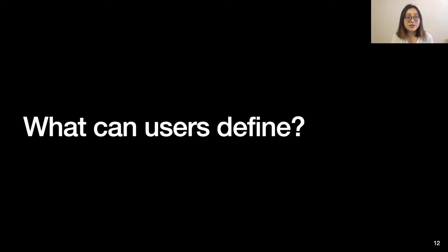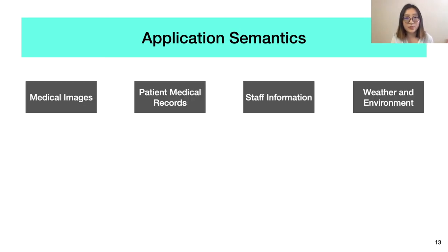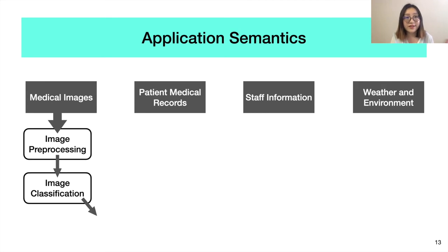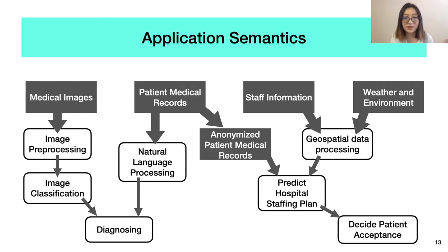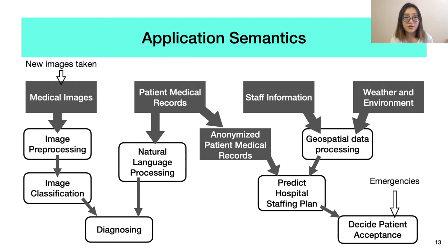Now let's take a closer look at what users can define, using the same hospital application. The first thing the hospital can define is application semantics, and they can define their own application as modules. For example, they can define data modules like medical images and medical records. They can also define processing modules like image preprocessing and image classification. Then they can combine these modules into a DAG, and finally specify the triggering events which would trigger the execution of their application.